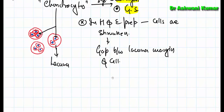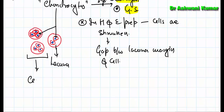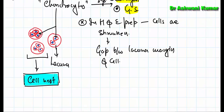The group of daughter cells from one chondrocyte remains in close relationship and forms what is called a cell nest. These daughter cells divide by mitosis and stay in close approximation to each other, forming the cell nest.